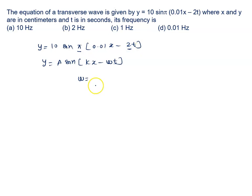If this pi is in omega, t is 2pi t. So omega is how much? 2pi.